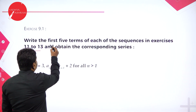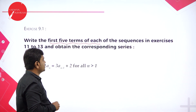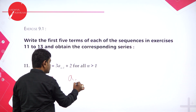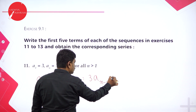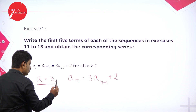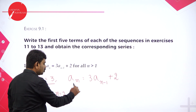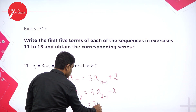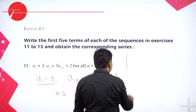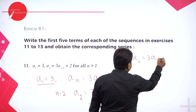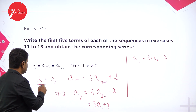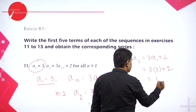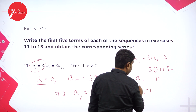From problems 11 to 13, you need to write the first 5 terms of each sequence. They gave A1 = 3, and the formula Aₙ = 3 times Aₙ₋₁ plus 2. A1 is already known. To find A2, put N = 2 in the formula: A2 = 3 times A1 plus 2. Since A1 = 3, it becomes 3 into 3 plus 2 = 9 plus 2 = 11.